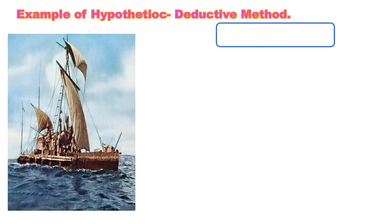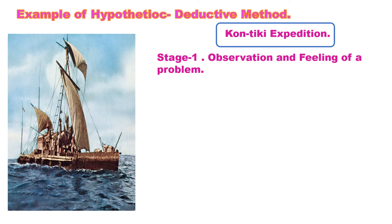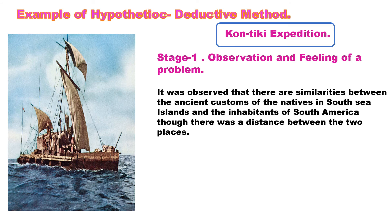Let us understand the hypothetical deductive method with an example: the Kon-Tiki expedition. The Kon-Tiki is a primitive boat or raft named after a god. The first stage is observation and feeling of a problem. It was observed that there are similarities between the ancient customs of the natives in South Sea islands and the inhabitants of South America, though there was a great distance between the two places.